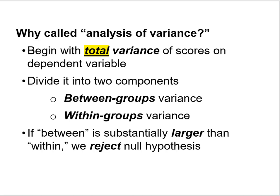Why is it called analysis of variance? A lot of times in a statistics class we come across terms without really understanding why things are named the way they are. We call this procedure analysis of variance because we begin with the total variance of scores on a dependent variable and divide that total variance into its two components: between groups variance versus within groups variance. In the analysis, if the between groups variance is larger than the within groups variance, we'll reject the null hypothesis.